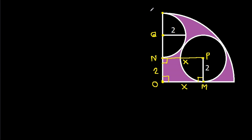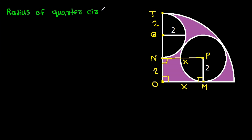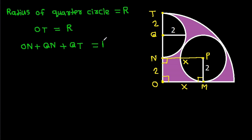Now suppose this point is T. Then PQ is the radius of the semicircle, which will be 2. Suppose the radius of the quarter circle is R. Then OT will be R, and OT equals ON plus QN plus QT, which equals R.